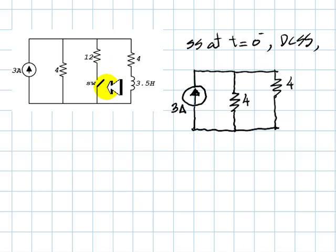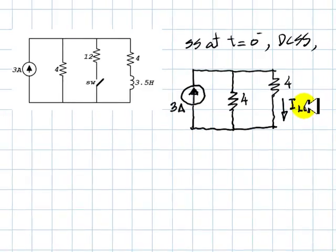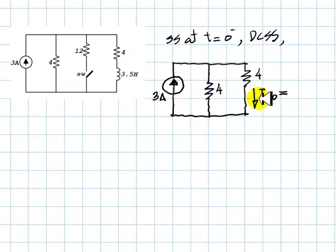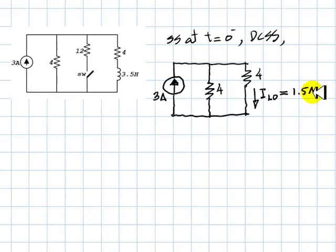This branch is not there because the switch is still open, and the inductor is represented by this wire. This current here is the initial current in the inductor. IL0 is the current we need to compute. In this case, the computation is simple. This is just a current divider of 3 between 4 and 4. That current is 1.5A.